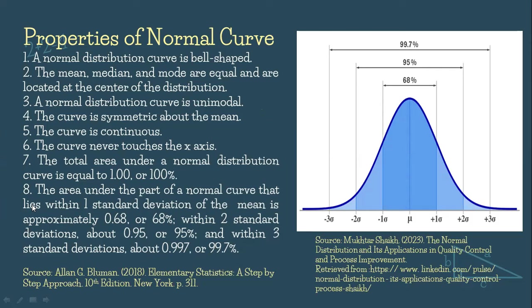So for our fourth property, the curve is symmetric about the mean. So when we say symmetric about the mean, it means whatever the area of the left part, that's also the area of the right part.